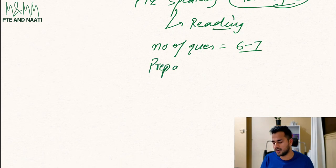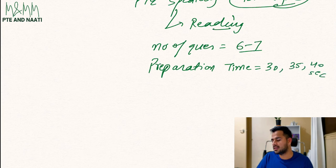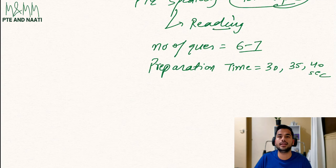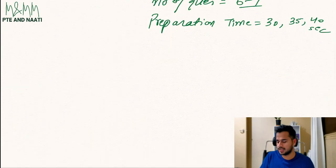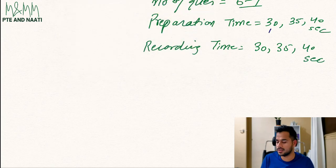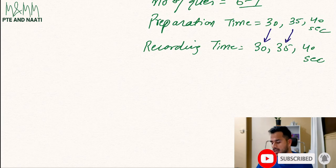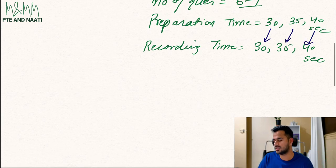Since it's a speaking task, they give you some preparation time beforehand — they won't start the recording straight away. That preparation time can be 30, 35, or 40 seconds, depending on the length and difficulty of the paragraph. Once the preparation time is over, the recording timer will start, and that recording time is again going to be 30, 35, or 40 seconds. So if you get 30 seconds to prepare, you get 30 seconds to answer, and the same goes with 35 and 40 seconds.